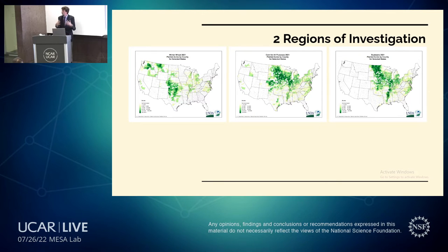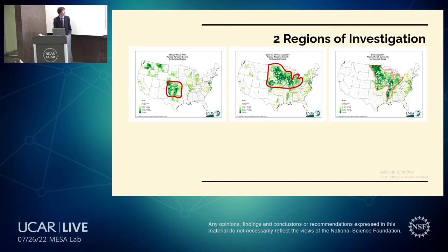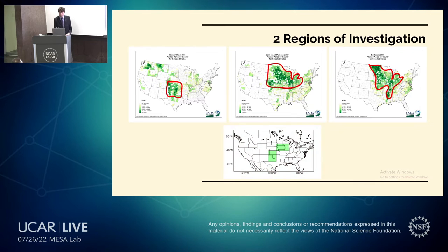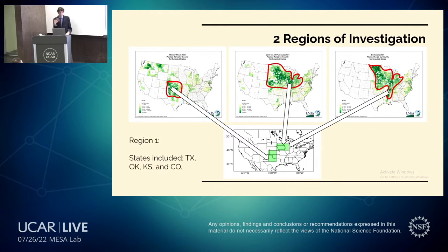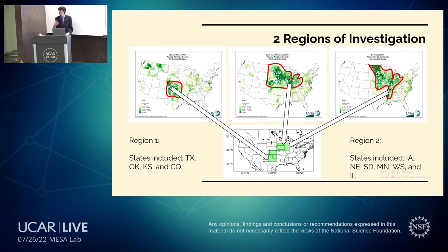We have two regions of investigation using agricultural use as a domain of focus. I have here the planting acres by county for three different crops: winter wheat on the left, corn in the center, and soybeans on the right, with the darkest greens indicating the heaviest density of agriculture. Region one, encompassing states such as Oklahoma, Texas, Kansas, and Colorado, covers winter wheat. Corn and soybeans are in region two, including Iowa, Nebraska, and South Dakota. It was interesting to examine such small regions of flash drought occurrence and see how characteristics may differ compared to the larger regions previous studies examined.